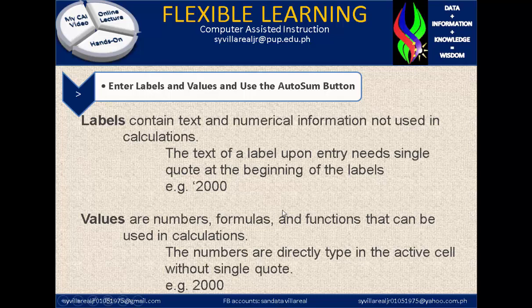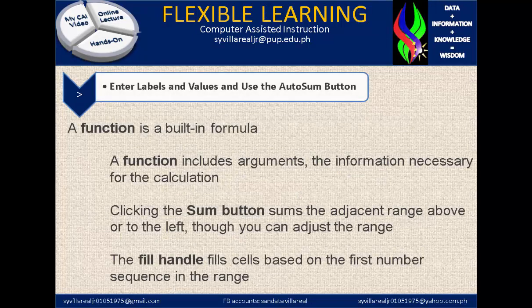Now, just in case, if you're going to identify that 2000 is a value, then they are considered to be numbers, formulas, and functions that can be used in calculations. The numbers are directly typed in the active cell without a single quote. For example, 2000.